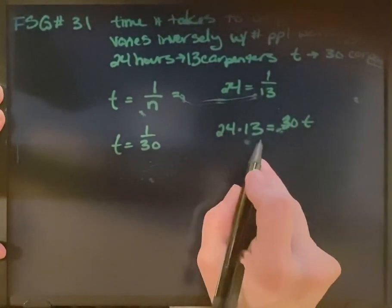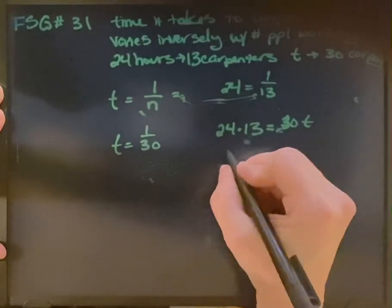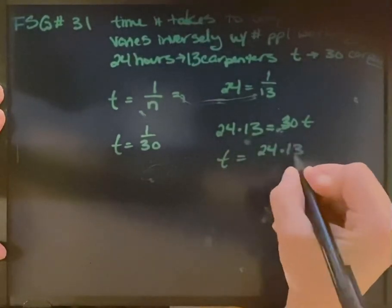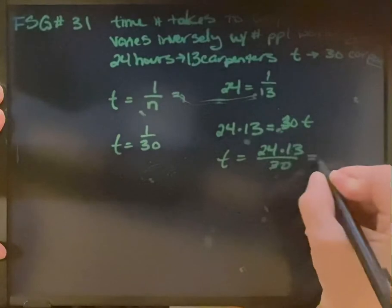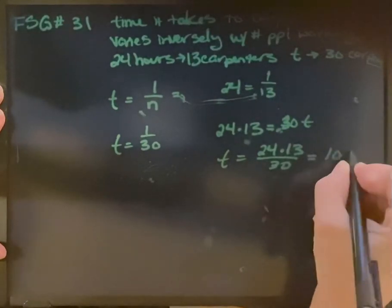So 24 times 13, and 30t. So t equals 24 times 13 over 30, which equals 10.4 hours.